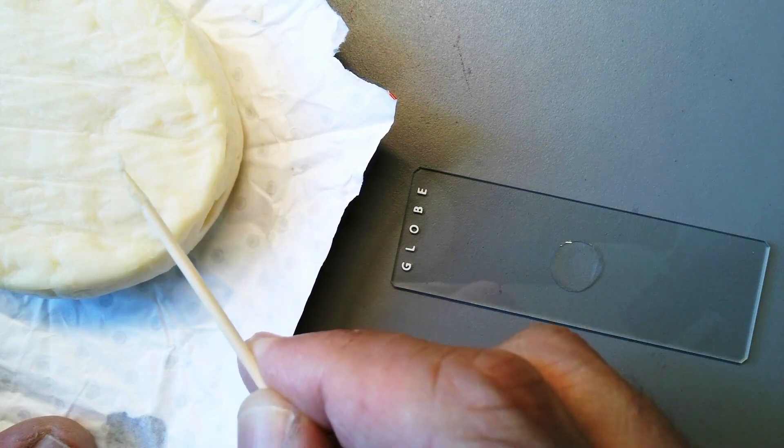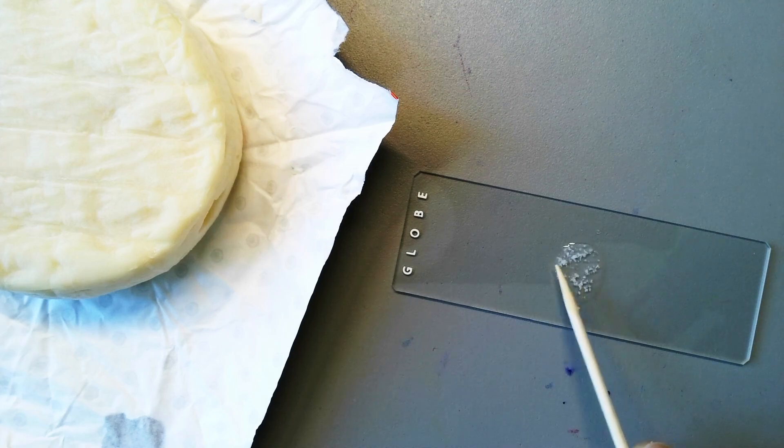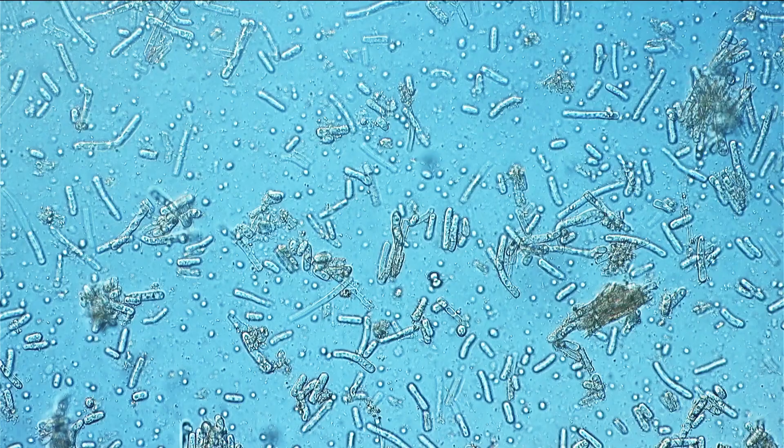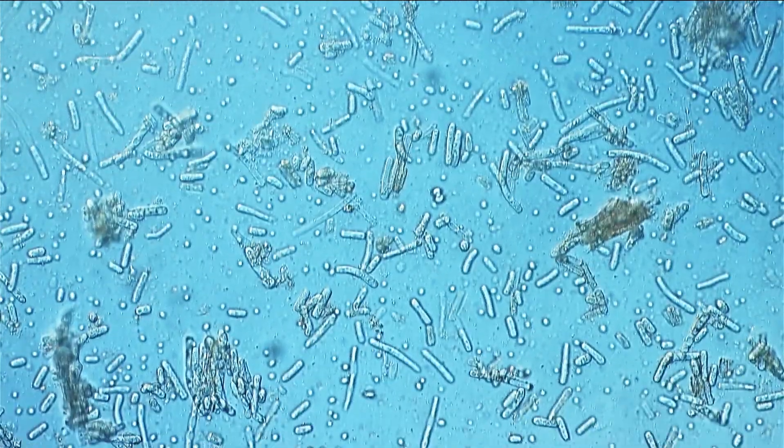Now let's see if we can actually spot some of those microbes that grow on the cheese also under the microscope. So I scratched a small part of the surface of the cheese, and I put it into a small drop of water, and the cover glass goes on top, and I put it under my microscope, and here we go, voila.